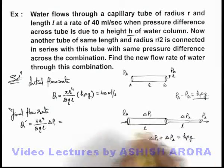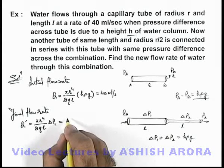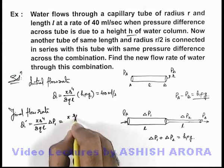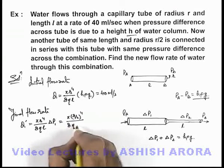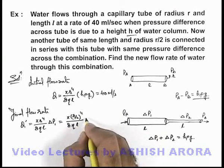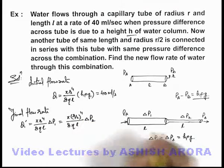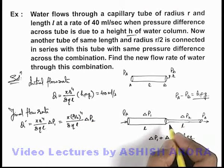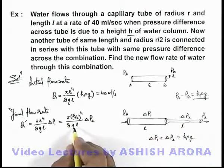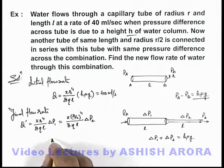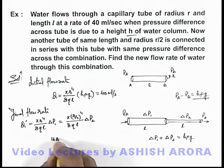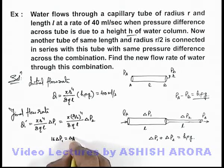For the second tube, if we write Poiseuille's equation, it will be π (r/2)⁴ / (8η l) as the length remains the same, multiplied by ΔP₂. On simplifying, we can see all the parameters cancel out and we are getting 16 ΔP₁ equals ΔP₂.